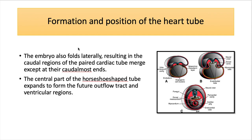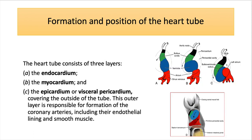The embryo folds laterally as well, resulting in the caudal region of the paired cardiac tubes merging except at the caudal-most ends. So the cardiac tube becomes a single structure instead of the horseshoe-shaped tube. The central part of the horseshoe-shaped tube expands to form the outflow tract and the ventricle regions. The heart tube at this stage is formed from three layers: the endocardium, the myocardium, and the epicardium or visceral pericardium.